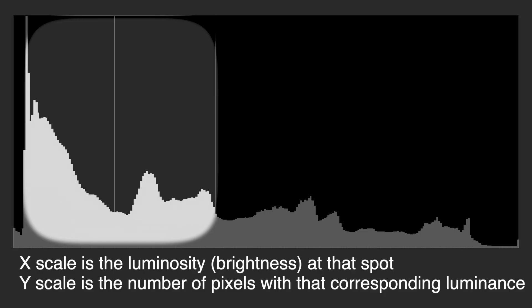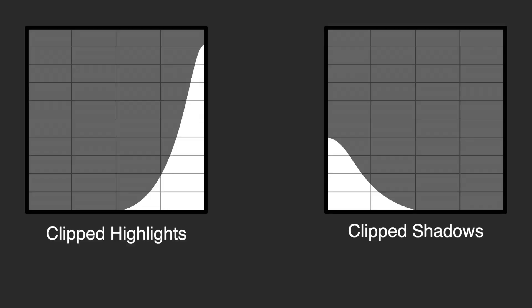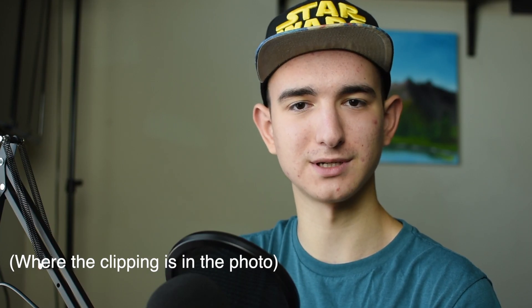A histogram basically shows you where your exposure is for that photo — it shows you how dark the shadows are and how bright the highlights are. Data further to the left is darker, further to the right means it's brighter. If any data goes past or piles up on the edge of the histogram, that means it is clipped and you cannot recover that data.